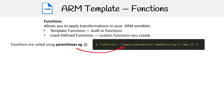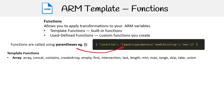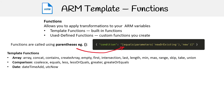Let's talk about some of the built-in functions. There are a lot available, and they're generally self-explanatory, so I'm not going to show examples — let's just go quickly through the list. You have array functions like array, concat, contains, createArray, empty, first, etc. Then you have comparisons like equals, less, lessOrEquals, greater, greaterOrEquals. You have date functions and deployment functions, and interestingly, parameters and variables are actually functions.